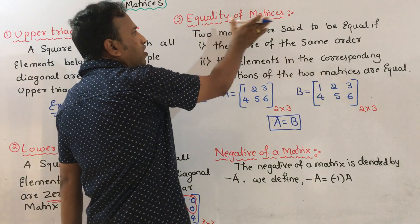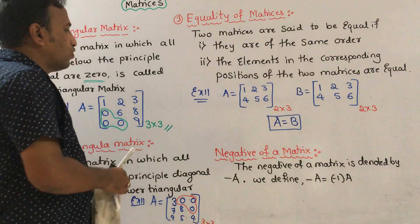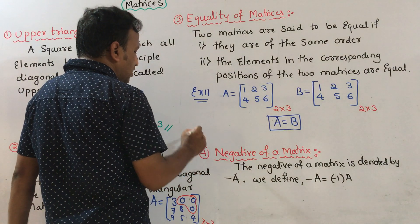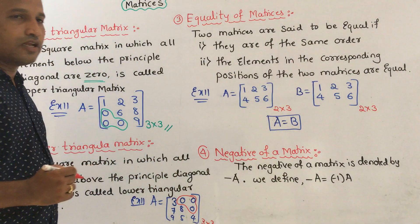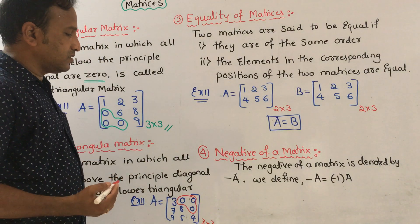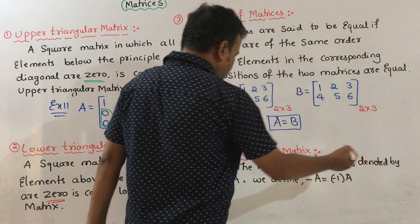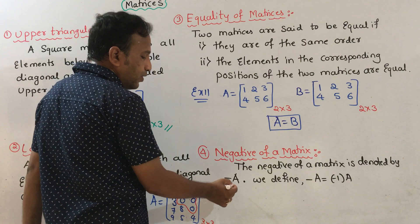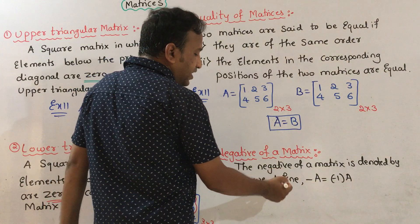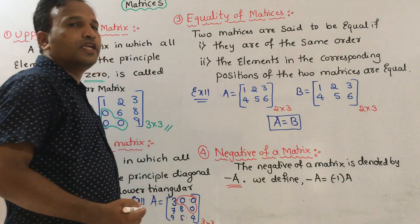Equality of matrices confirmed. Next, fourth definition: negative of a matrix. The negative of a matrix A is denoted by minus A, and we define minus A as equal to minus one times A.